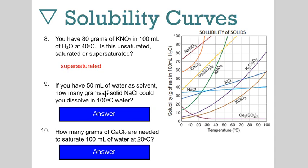If you have 50 mils of water as your solvent, how many grams of solid sodium chloride could you dissolve in 100 Celsius water? At 100 Celsius per 100 mils of water, we should dissolve 40 grams. So half that volume, we should be able to dissolve half the mass of solute, so 20 grams.